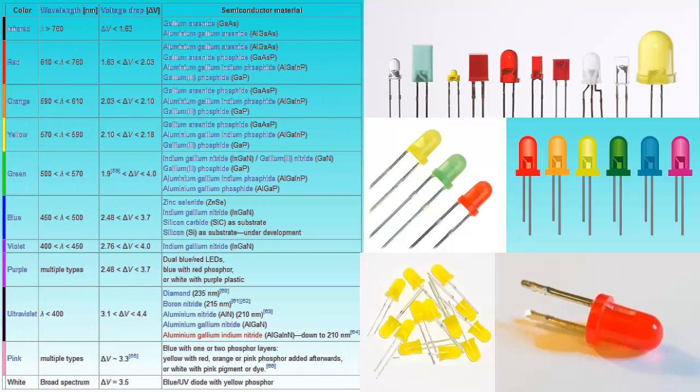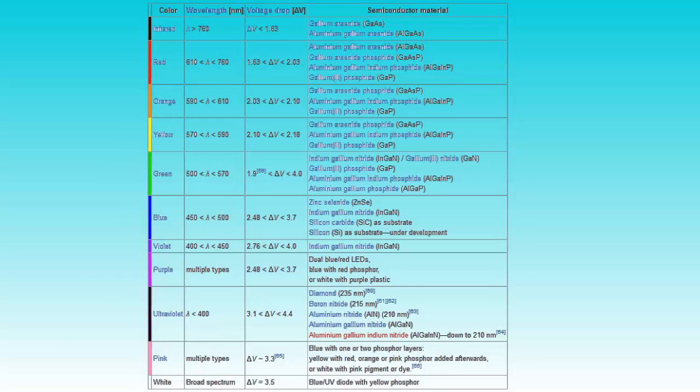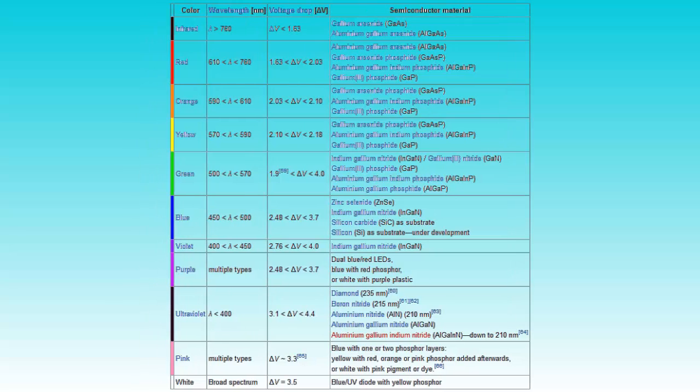As a side note, the color of the housing of an LED does not determine the color of the light. As I said, the color of the light is determined by the semiconductor material that is used.